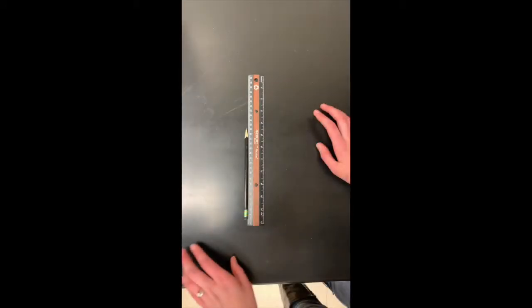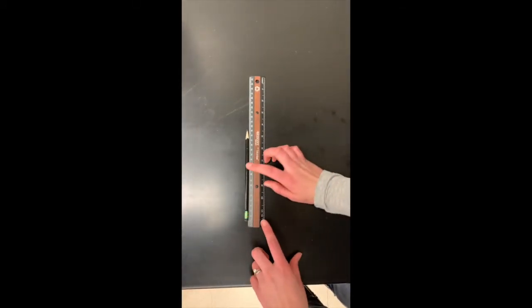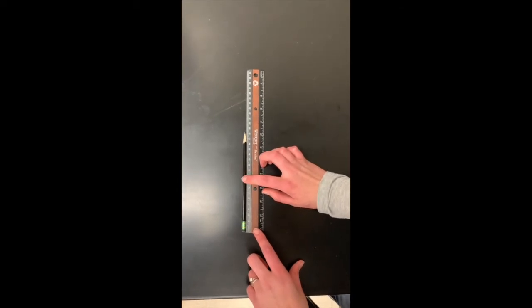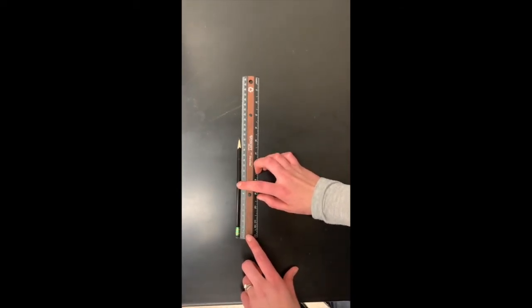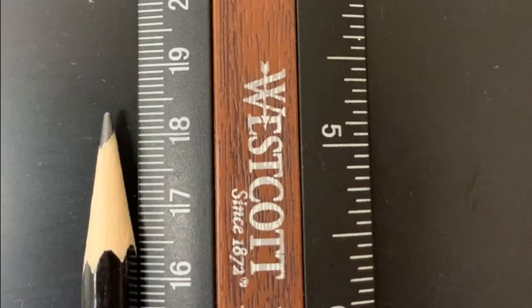Now let's use a real ruler to measure a pencil in centimeters. The ruler has marks at every 0.1 centimeters, which is the first decimal place, so we will estimate to the second decimal place. The length of the pencil is 18.33 centimeters.